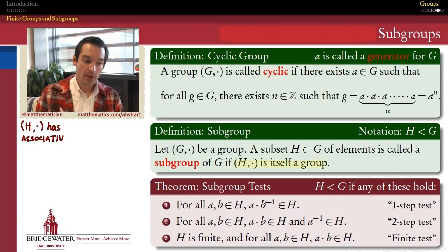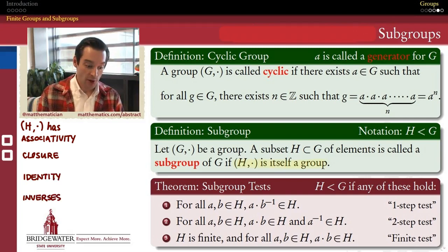So let's actually prove the one-step test. In order to do any of these proofs, we need to show that any subset that satisfies the property that we're claiming here is a group in and of itself using the operation of G. So we have to verify associativity holds, closure holds, the identity property holds, and the inverses property also has to hold.